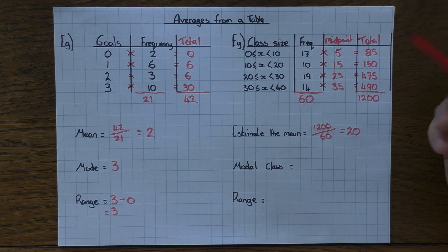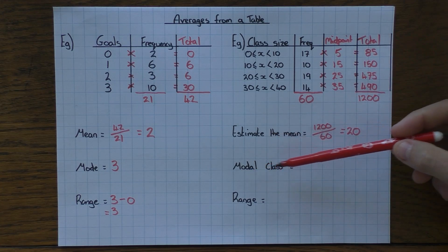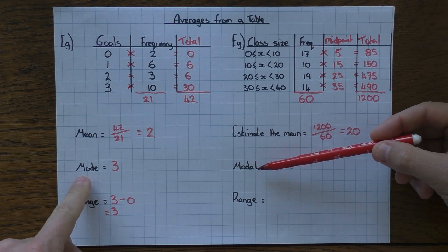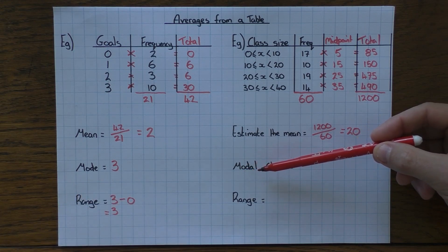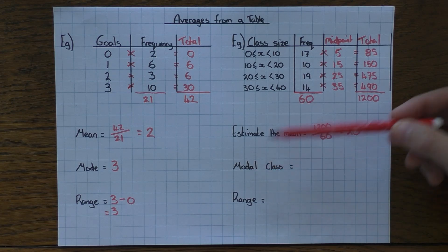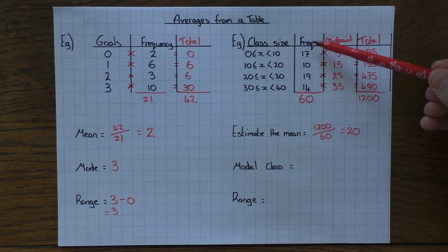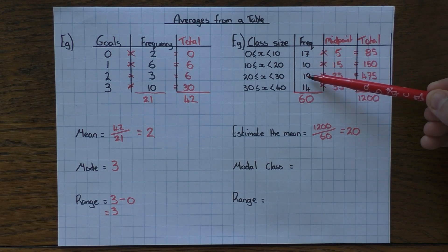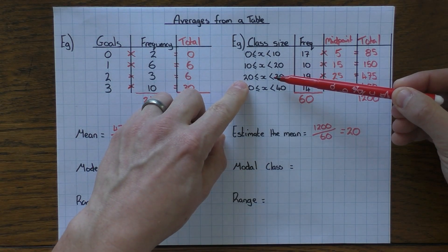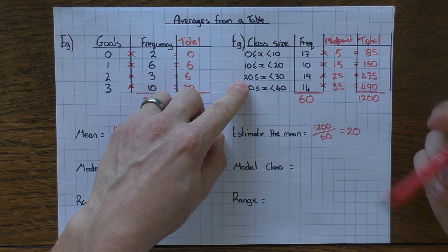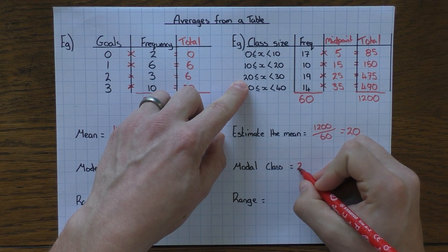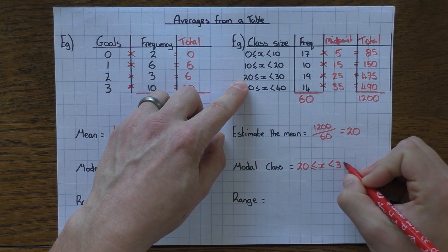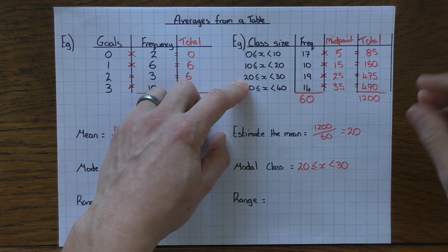For the modal class — 'modal' and 'mode' mean the same thing, so don't be confused. Look at the frequencies and find the highest: 19 is the highest frequency here, so the modal class is 20 to 30.